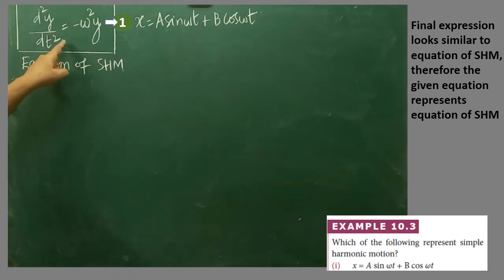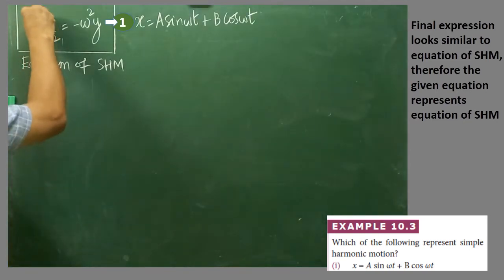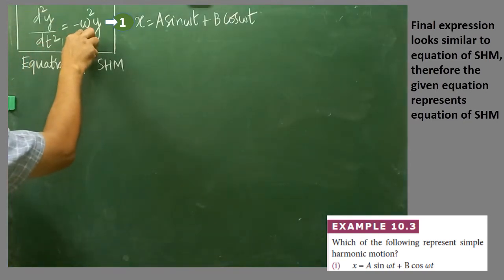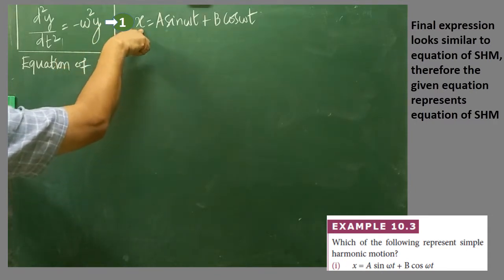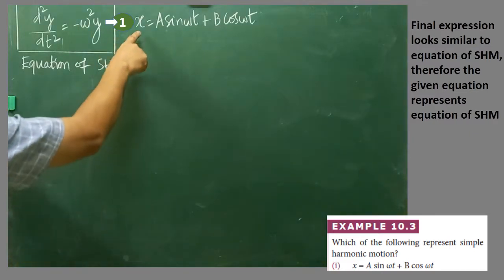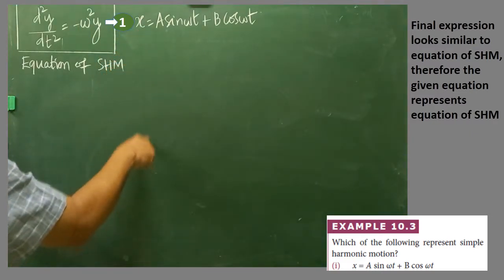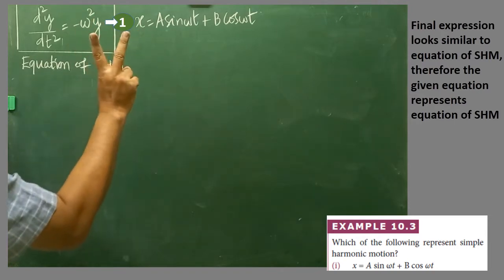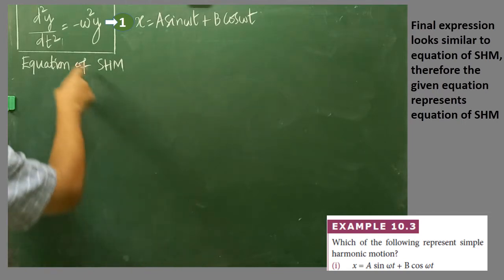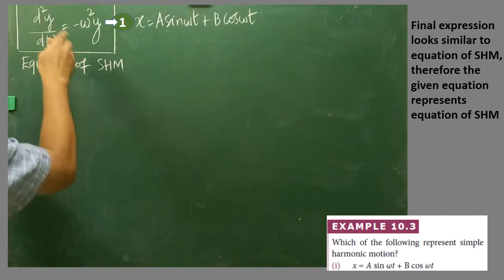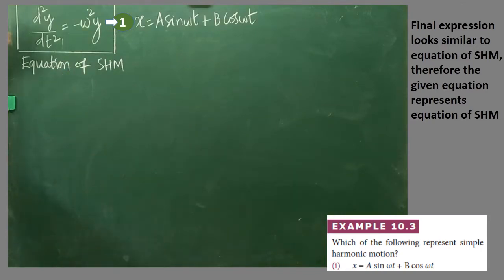First, you have to understand the general equation of SHM. The general form is: d²y/dt² = −ω²y. This is called the equation of SHM. Here x is given, and this x must be differentiated two times. After differentiating x with respect to time twice, you get d²x/dt², which must be compared with the general equation of SHM. If both resemble the same form, then we can call it simple harmonic motion.